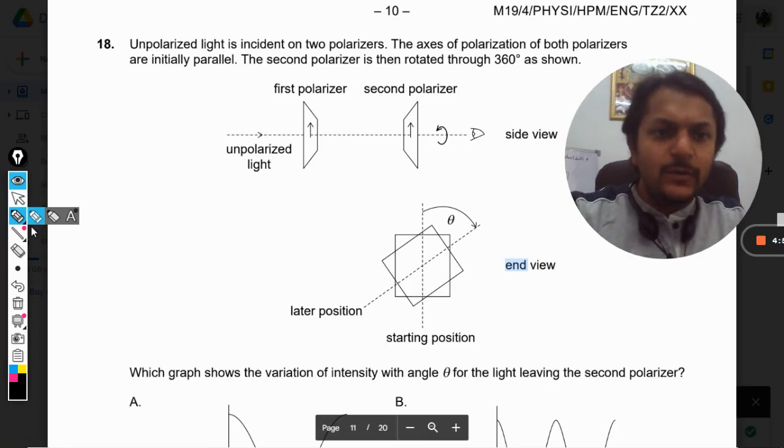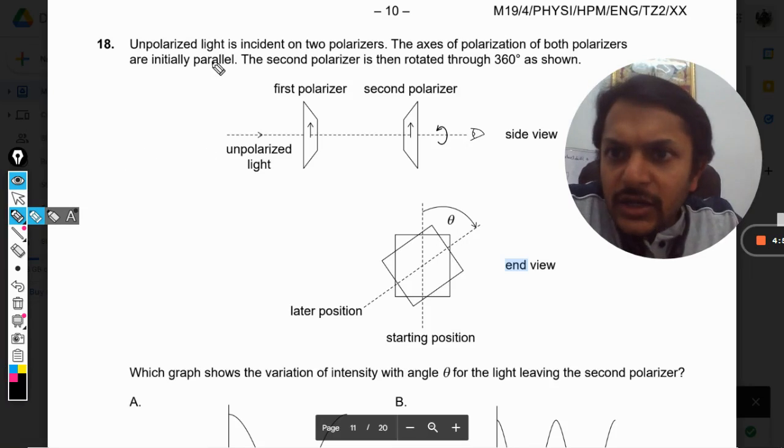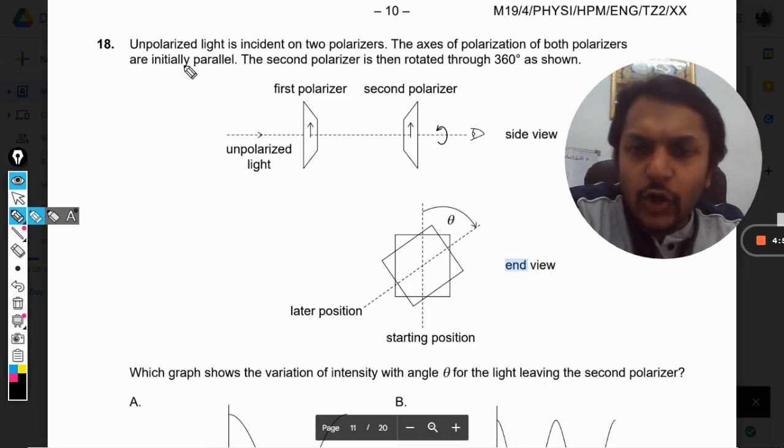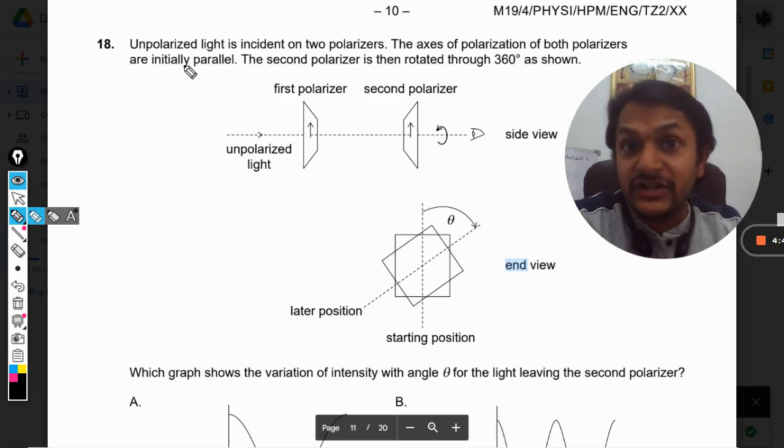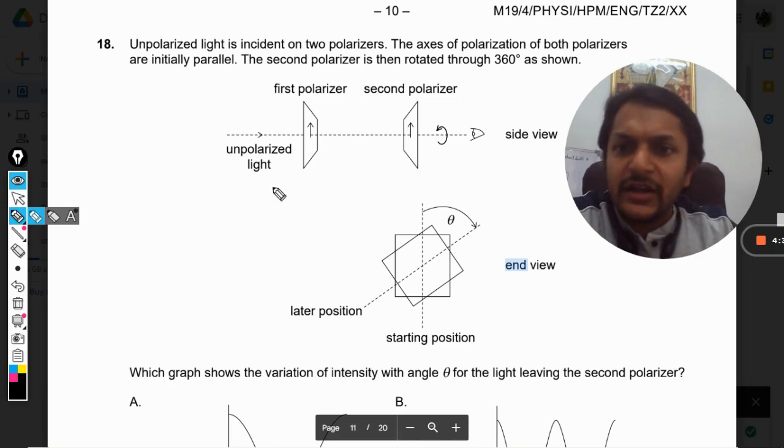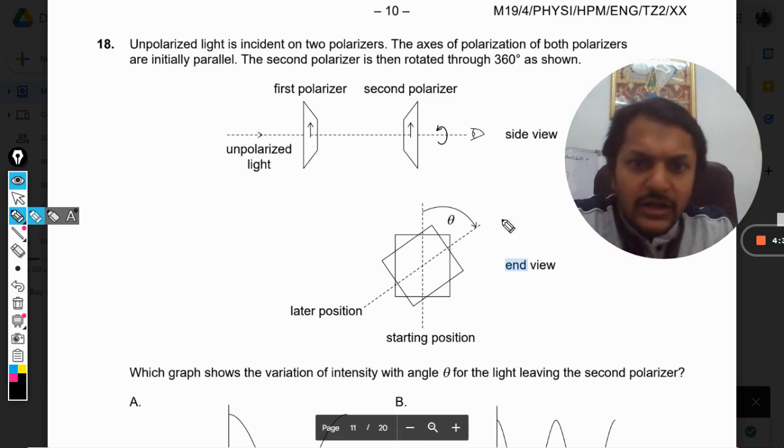Okay dear students, let us see what is there in this question. Unpolarized light is incident on two polarizers. The axes of polarization of both polarizers are initially parallel. The second polarizer is then rotated through 360 degrees as shown.